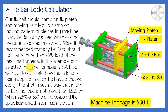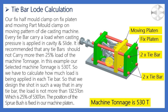When casting pressure is applied in the cavity or slide through the plunger from the sprue area, every tie bar shares the load of the casting pressure. The important thing is how much load each tie bar is carrying. It is recommended that a tie bar should not carry more than 25% of the machine tonnage. We are taking an example of a 530-ton machine.